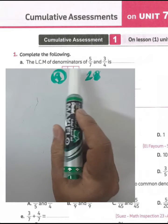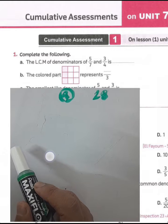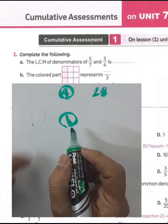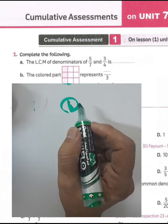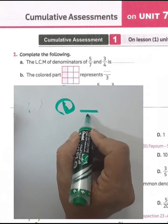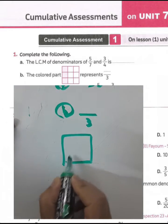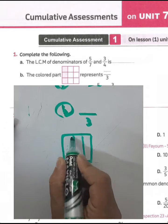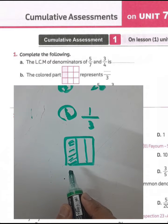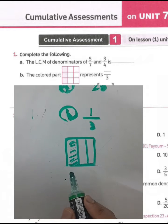So the least common multiple of the two denominators seven and four is seven times four equals twenty-eight. For question letter P: the colored part shown is one over three. We have three vertical parts here and one is colored, so the ratio is one over three. Write one in this space.